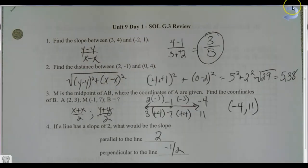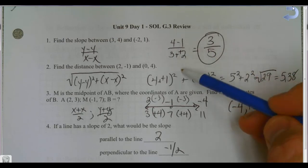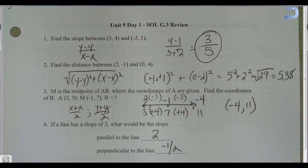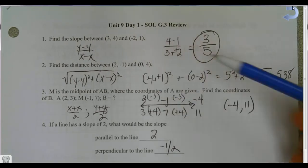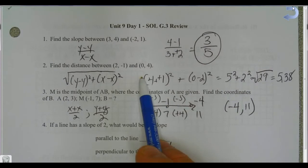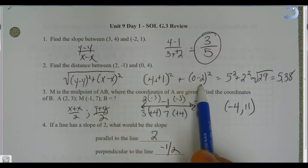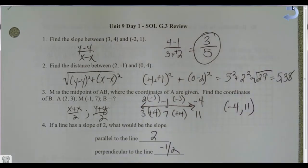Okay, so we finished the review. Here's my work on the slope formula: I did four minus one and then three minus negative two to get three over five. For distance, I did four minus negative one, got five squared, and zero minus two gave me negative two squared. Remember, any number squared is going to be positive.